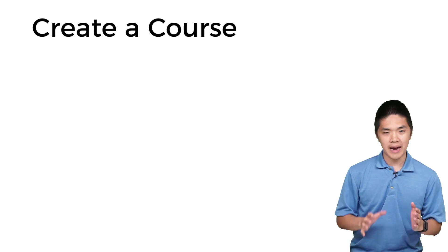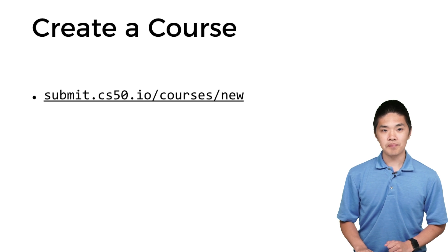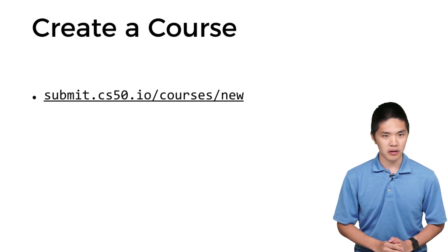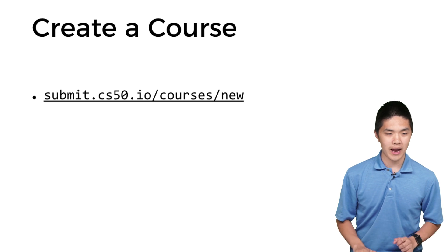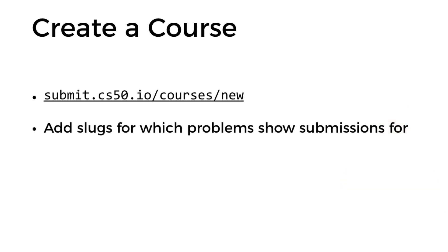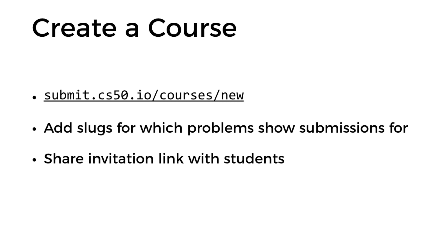So what are the steps to actually create a course on submit.cs50.io? The first thing you'll do is go to submit.cs50.io/courses/new to create a new course. From there, you'll be able to add slugs for which problems you want to show submissions for. After that, you'll be able to create an invitation link to share with students. You can also create invitation links for other teachers if you'd like them to manage the course too.